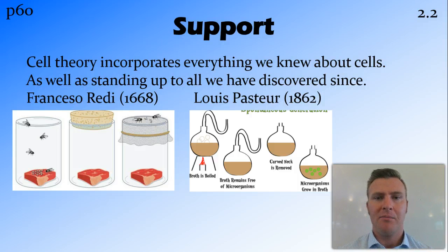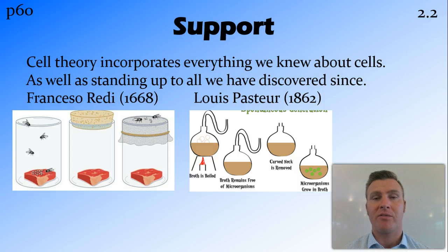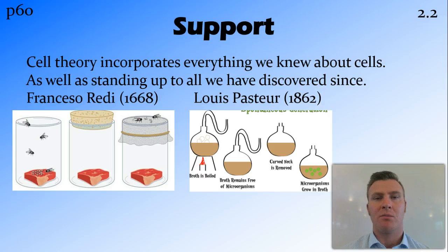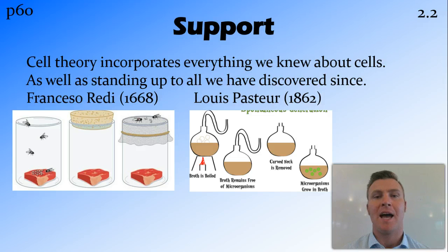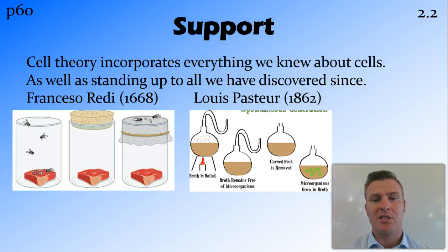Everything leading up to that time was incorporated in cell theory, as well as all the things we've discovered since — looking at the other structures inside cells — which has also supported cell theory. This is why we still keep something that's over 200 years old. Some of the big things that support this were Francesco Redi's experiment in 1668 and Louis Pasteur's experiment in 1862, which both go to prove the invalidity of spontaneous generation.